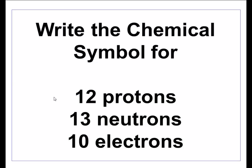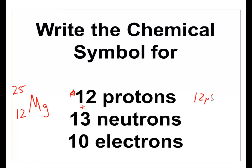A little more practice — give me the chemical symbol for something that has twelve protons, thirteen neutrons, and ten electrons. I have twelve protons — look on the periodic table for atomic number twelve, and you'll find magnesium. My mass number is protons plus neutrons: twelve plus thirteen gives me twenty-five. For the charge: twelve protons compared to ten electrons — I cancel out ten electrons with ten protons, and I have two protons left over. Magnesium sports a two plus charge.